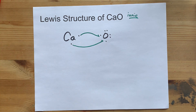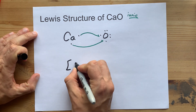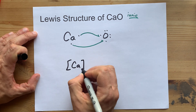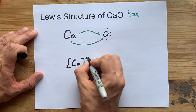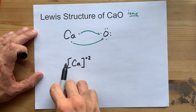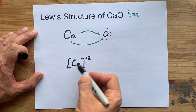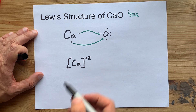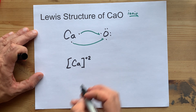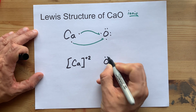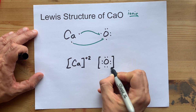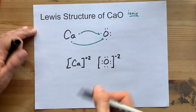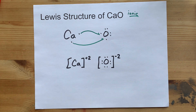Now that electron is paired. The final Lewis structure will show the Ca, or calcium ion, without its two electrons because it gave them away. There is a plus two charge, and whenever we show a charged particle in a Lewis structure, it gets square brackets with the charge written in the top right corner. The oxygen now has eight electrons around it — two more than it started with — so you put the square brackets with the minus two charge.